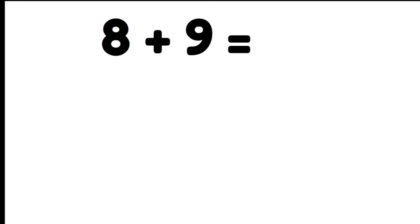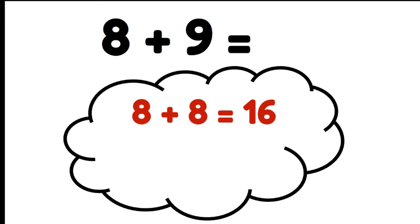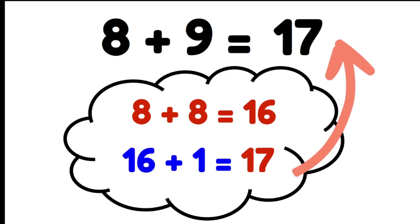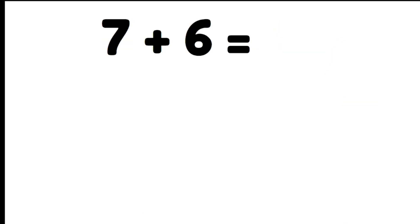Let's take a look at eight plus nine. We're going to use double eight, but nine is one more than eight, so we're going to have to add one more after we do our doubling. Double eight gives us sixteen. Now we add our one more — sixteen plus one more gives us seventeen.